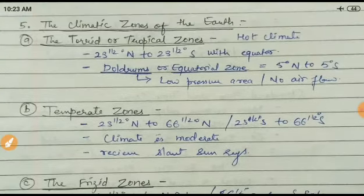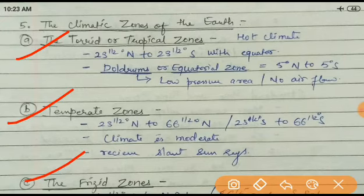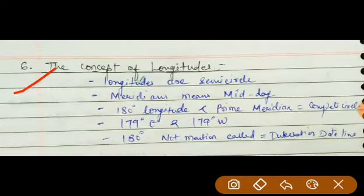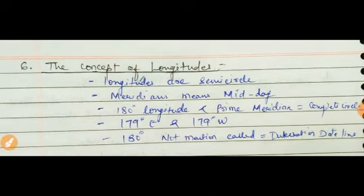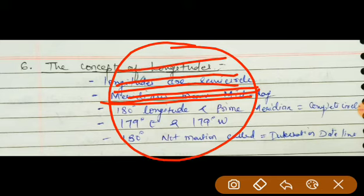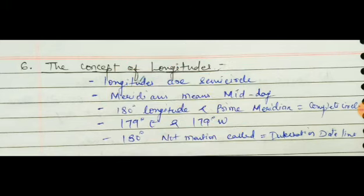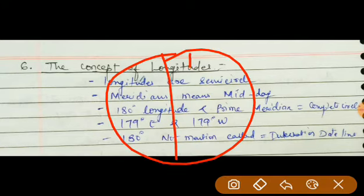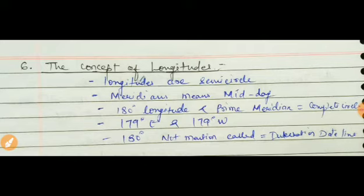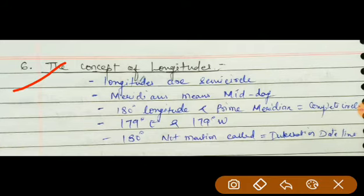So I hope the three zones — Torrid, Temperate, and Frigid — and their locations are now clear. Now we come to the concept of longitude. Remember, students often confuse latitudes and longitudes. Here is a memory tip: in Hindi, 'lat' means horizontal (let it lie flat), so latitudes are the horizontal lines. 'Long' means 'lamba' (long/vertical), so longitudes are the vertical lines. By this you can remember and not confuse the two.